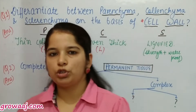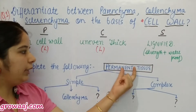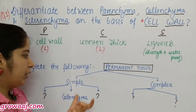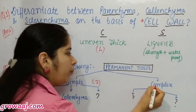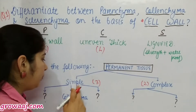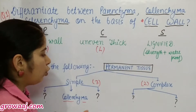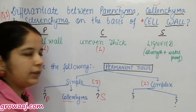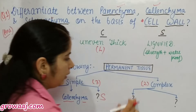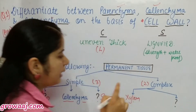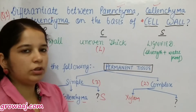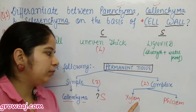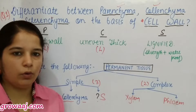The second question is to complete a flowchart. Permanent tissues are of two types: simple permanent and complex permanent. Simple permanent tissue is further of three types: parenchyma, collenchyma, and sclerenchyma. Complex permanent tissue is of two types: xylem and phloem. Xylem transports water and phloem transports food. Such flowchart-type questions can also appear in exams.